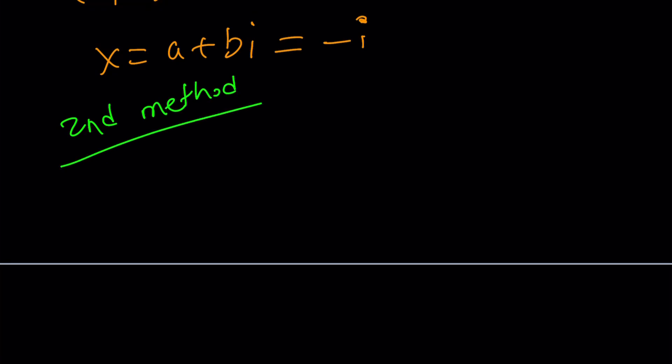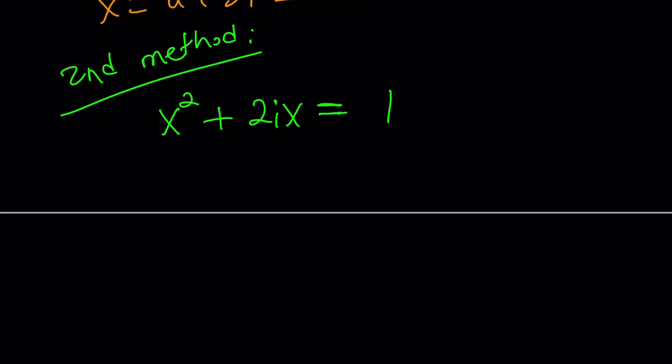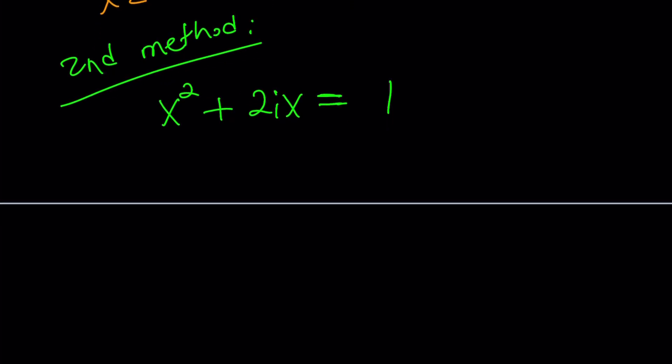For my second method, I'm going to rewrite the equation, of course. x squared plus 2ix equals 1. For those of you who are just coming in, this is the second method. We already did the first method. Now, for my second method, I'd like to use the quadratic formula. Why? Because it works all the time. Let's go ahead and subtract 1 from both sides, and then turn this into a full quadratic, and then apply the quadratic formula.